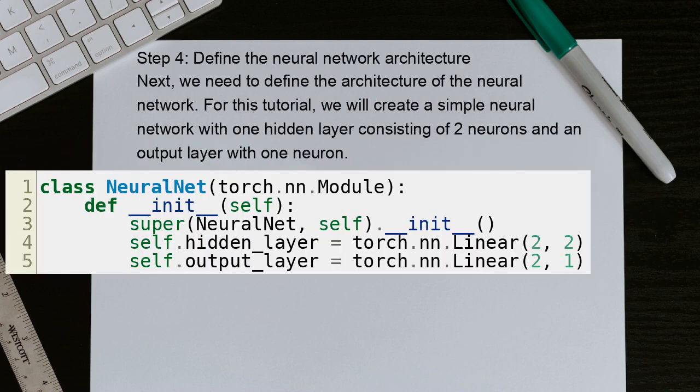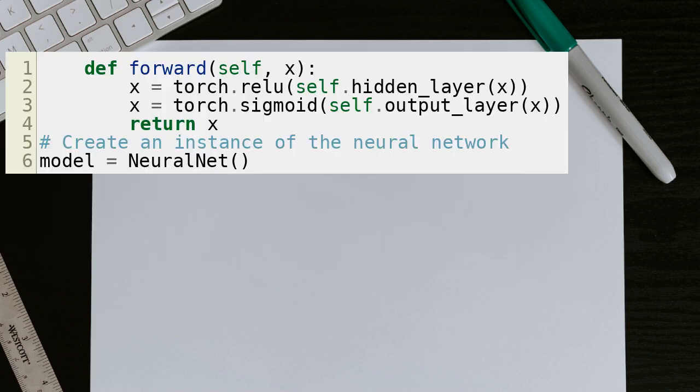Step 4: Define the neural network architecture. Next, we need to define the architecture of the neural network. For this tutorial, we will create a simple neural network with one hidden layer consisting of two neurons and an output layer with one neuron. And here is the rest of the code. Let's continue.